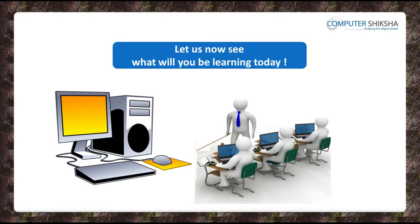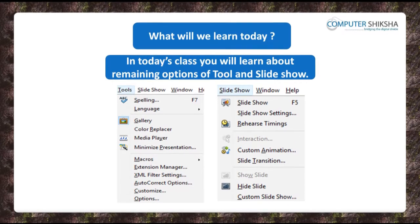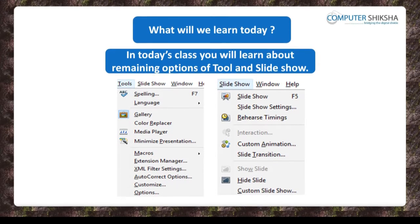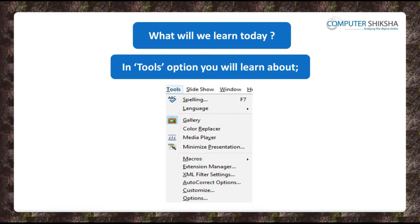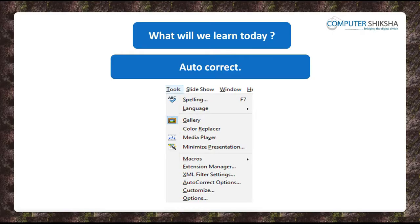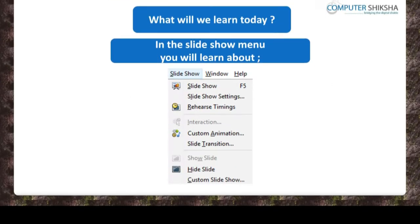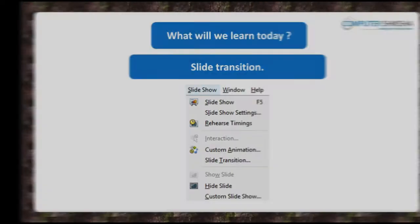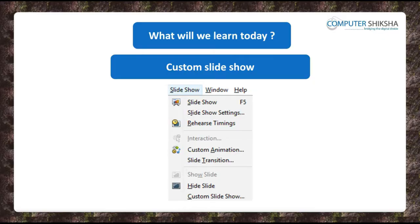Let us now begin today's class. In today's class, you will learn about the remaining options of the Tools and Slideshow menu. The options of the Tools menu that you will learn about are Extension Manager, XML Filter Setting and Auto-Correct. The options from the Slideshow menu that you will learn about are Rehearse Timing, Interaction, Slide Transition and Custom Slideshow.